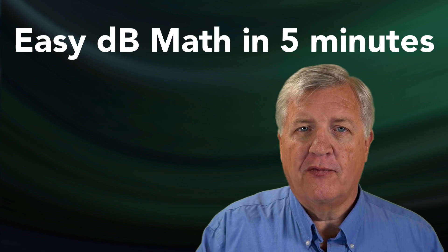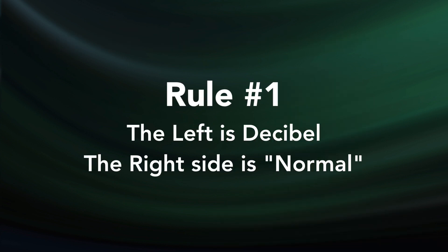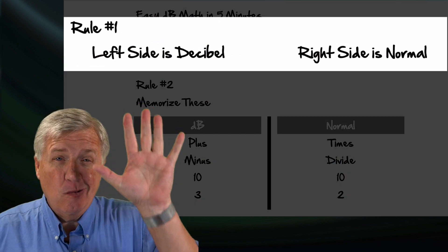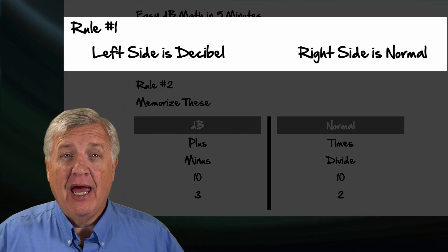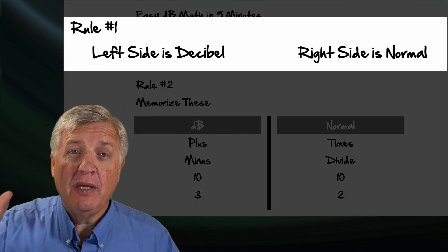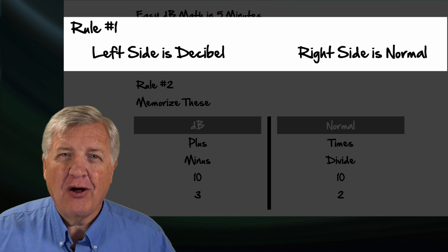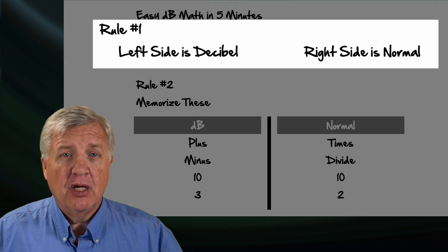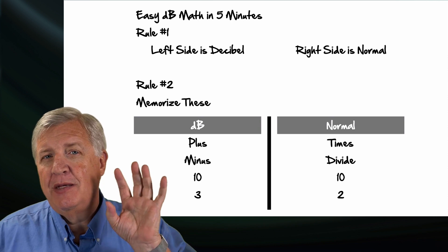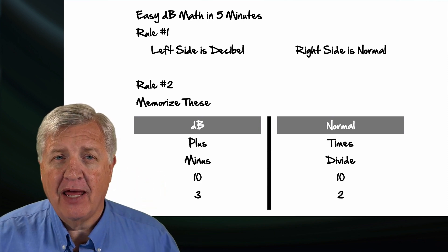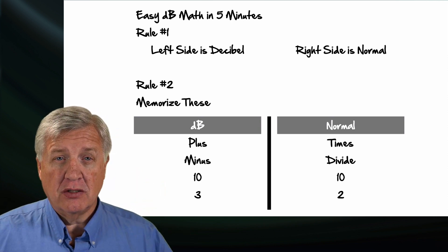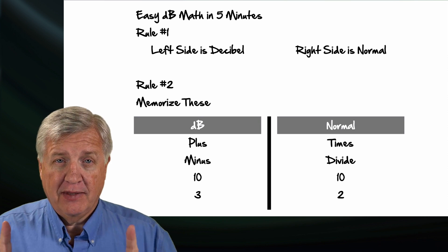There are two rules. First rule: the left side is going to be DBs and the right side is going to be what I call regular math. All you need to do is draw a line down the page and put those two sides. The DB stuff stays on the DB side and the regular math stays on the regular math side, and never do they cross. That's the first rule.